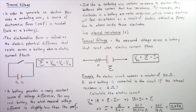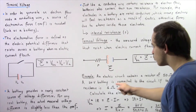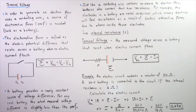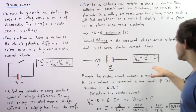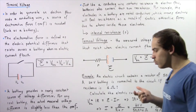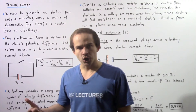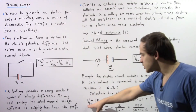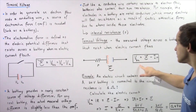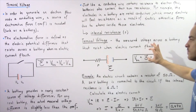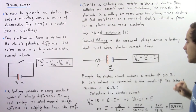An electric circuit contains a resistor of 50 ohms. A 24-volt battery is connected to this closed electric circuit. If the internal resistance of the battery is 1 ohm, calculate the electric current inside our closed circuit. We use Ohm's law together with the terminal voltage equation. By Ohm's law, voltage equals the product of electric current and resistance, so V_BA equals I multiplied by R. The terminal voltage equation tells us that V_BA equals the EMF minus I multiplied by lowercase r.